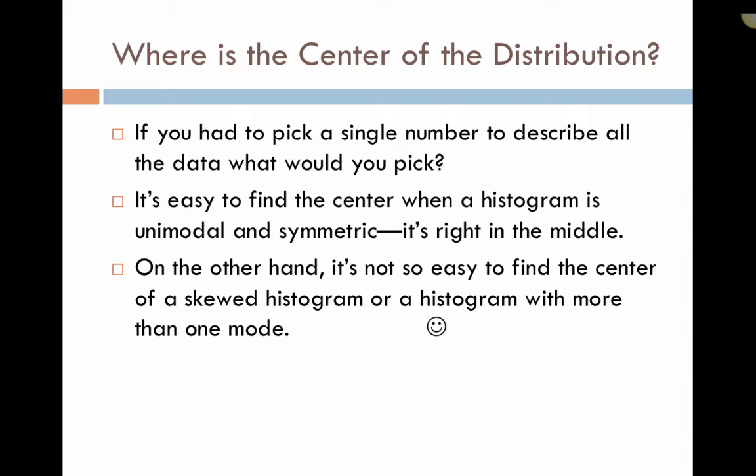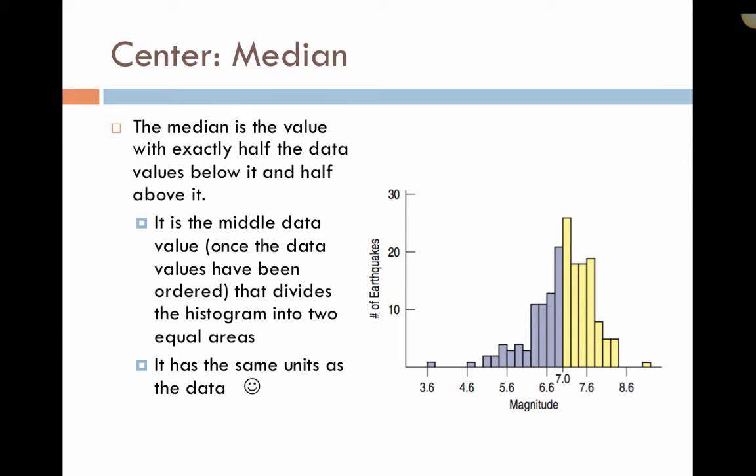Then we are going to talk about the center of the distribution. The center of the data is a single number to describe the data as a whole. It's easy to find the center if it's unimodal and symmetric because it's going to be right there in the middle, but it's not quite as easy if the histogram is skewed or if there is more than one mode present. The first way to describe center is with the median. The median is a value that is exactly in the middle of the data. Half of the data values are below, half of the data values are above. The median will always have the same units as the data. In this histogram, we're looking at the magnitude of earthquakes and the median value is 7. Then half of the data values in purple are below and half of the data values in yellow are above.